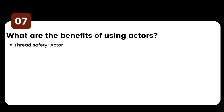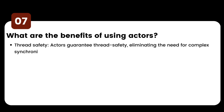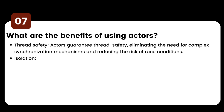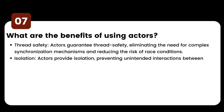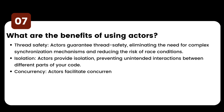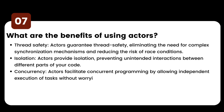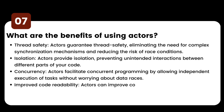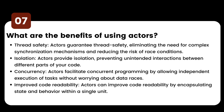What are the benefits of using actors? Thread safety: actors guarantee thread safety, eliminating the need for complex synchronization mechanisms and reducing the risk of race conditions. Isolation: actors provide isolation, preventing unintended interactions between different parts of your code. Concurrency: actors facilitate concurrent programming by allowing independent execution of tasks without worrying about data races. Improved code readability: actors can improve code readability by encapsulating state and behavior within a single unit.